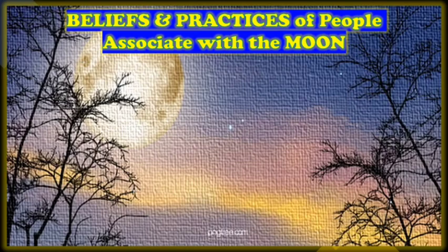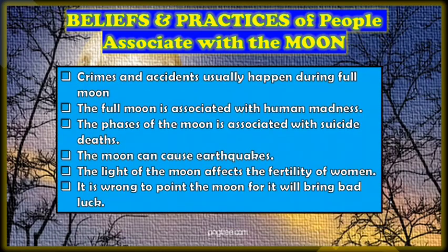Additional beliefs include: crimes and accidents usually happen during a full moon; the full moon is associated with human madness; the phases of the moon are associated with suicide and deaths; the moon can cause earthquakes; the light of the moon affects the fertility of women; and it is considered wrong to point at the moon as it will bring bad luck. Those are the beliefs and practices of people associated with the Moon.